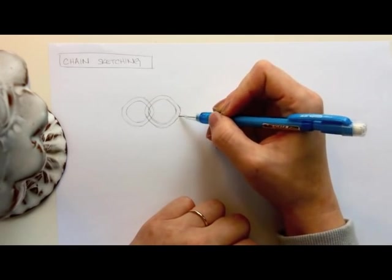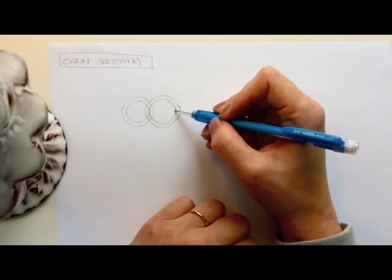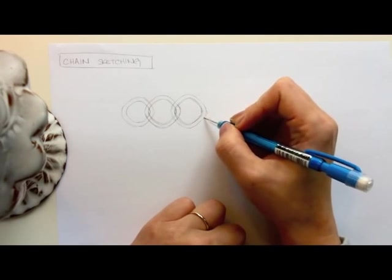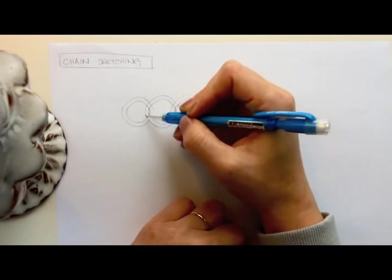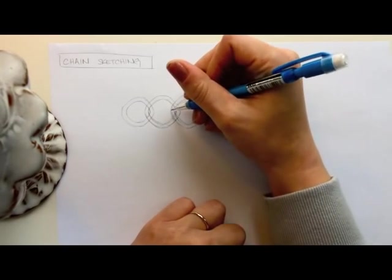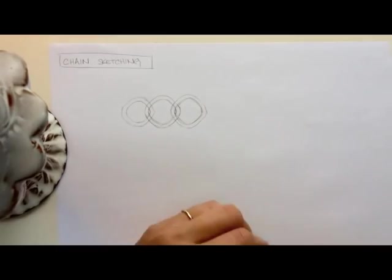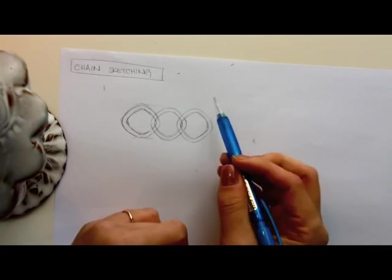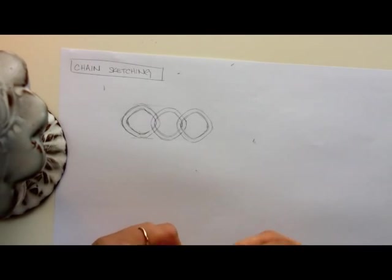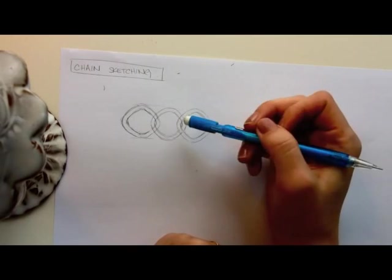Okay, so now I know where to start my third circle, which is right here. I just make the circles as is and I just keep it light so that I can erase later on. So now we have three links that are roughly the same size, which is a good start.